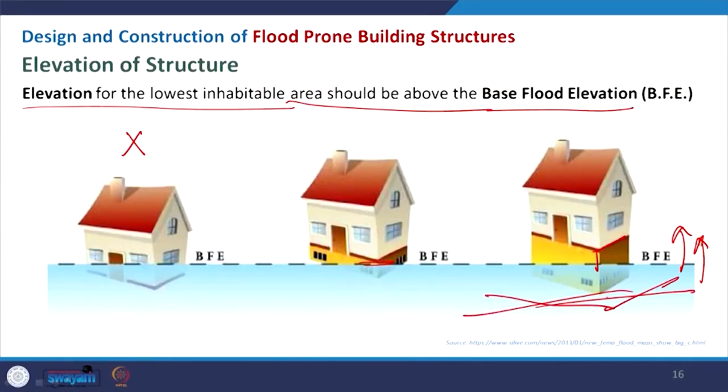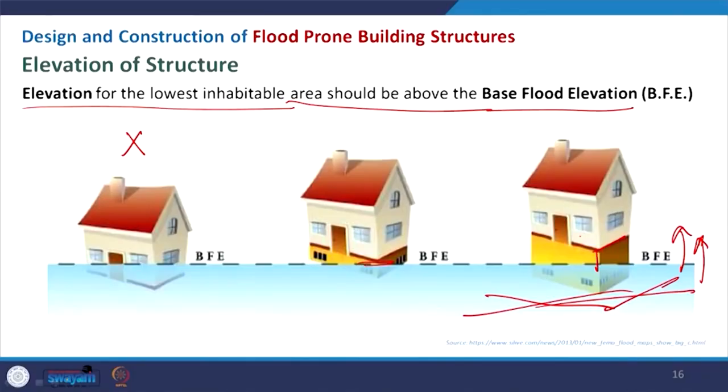When you raise the building above the surface by increasing the plinth height, the cost will be additional. You can make the plinth low if flooding is unpredictable, but if your site is known to be prone to waterlogging or flooding, spending a little more initially will save a lot in the long run, allowing the structure to sustain during such situations. Elevation is one important measure to reduce flood risk.